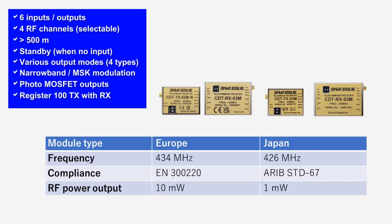The CDT modules have the following features: the ability to send up to six signals independently while being able to select four RF channels. It is also possible to pair transmitters to a single receiver, and the photo MOSFET outputs can drive a variety of loads.